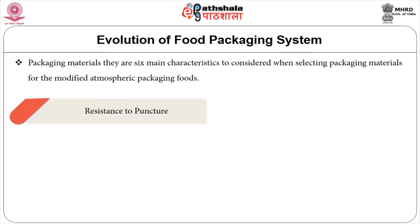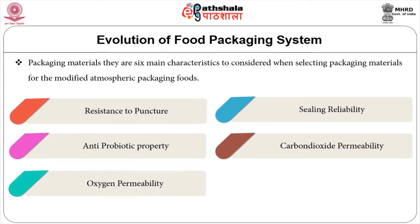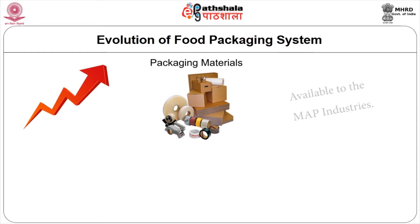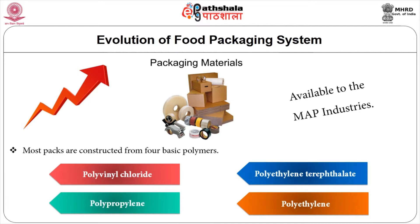Regarding packaging materials, there are six main characteristics to consider when selecting packaging materials for MAP foods: resistance to puncture, sealing reliability, anti-fogging property, carbon dioxide permeability, oxygen permeability, and water vapor transmission rate. Although an increasing choice of packaging materials is available, most packs are constructed from four basic polymers: polyvinyl chloride (PVC), polyethylene terephthalate (PET), polypropylene (PP), and polyethylene (PE).